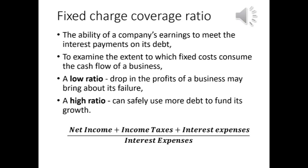Operating margins show how well management has run the business. The fixed charge coverage ratio measures the ability of a company's earnings to meet the interest payments on its debt, and is used to examine the extent to which fixed costs consume the cash flow of a business. It shows how many times a business can pay for its fixed costs with its earnings before interest and taxes. A low ratio is a strong indicator that any subsequent drop in profits may bring about the company's failure; a high ratio indicates that a business can safely use more debt to fund its growth. It is calculated as: net income plus income taxes plus interest expenses, divided by interest expenses.